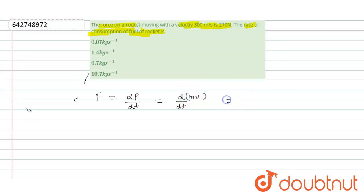There is a constant velocity with which rocket is moving, so v into dm by dt. M is the mass of fuel. dm by dt is the rate of consumption of fuel. We have to find dm by dt.